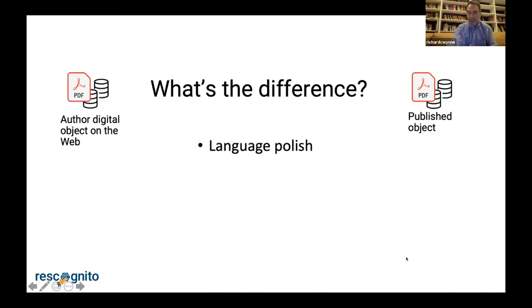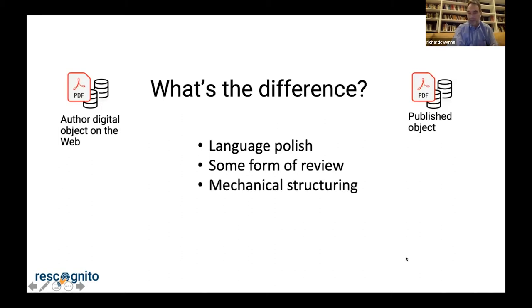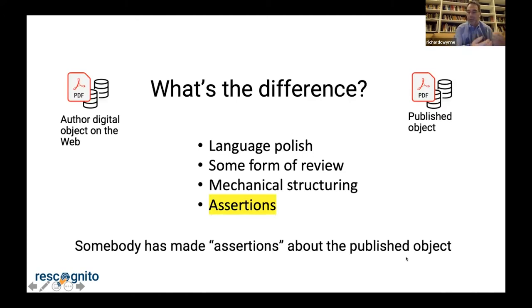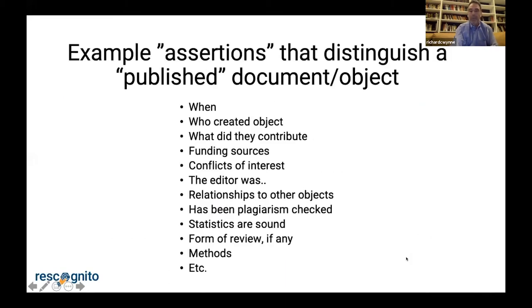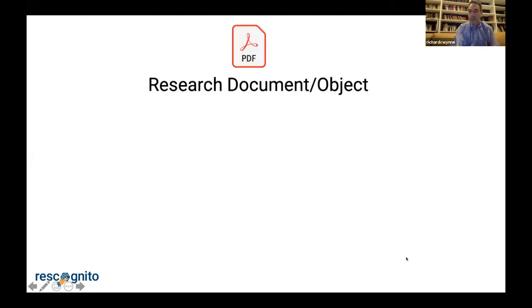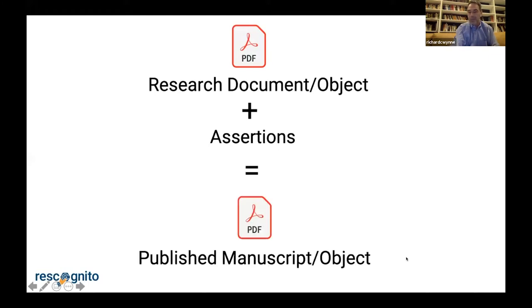So what's the difference? Well, there's some language polish, there's some form of review that's often done for free by peer reviewers, and there's a mechanical structuring of the document. But I would draw your attention to the assertions that are made about the published object — someone, hopefully who you trust, has made some valuable assertions about that object, which means that you consider it to be published rather than just posted on the web. A research document on the web plus assertions equals a published document.